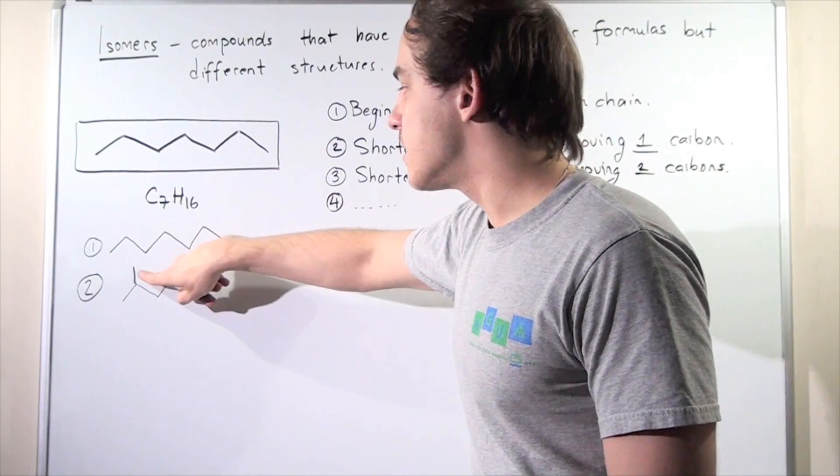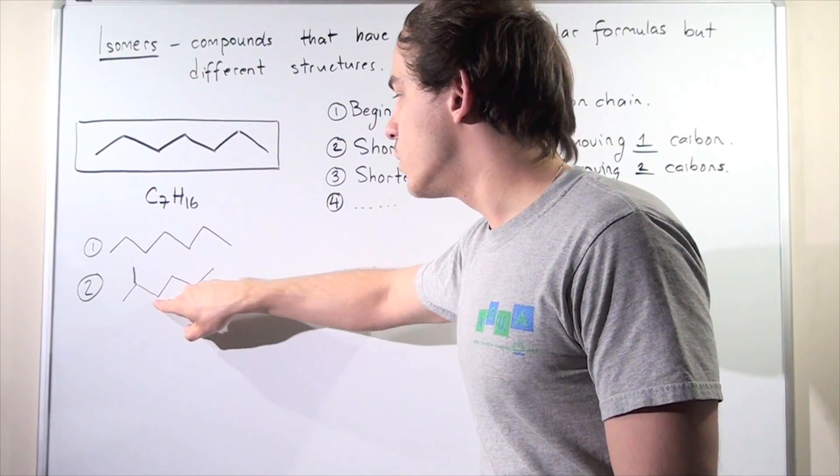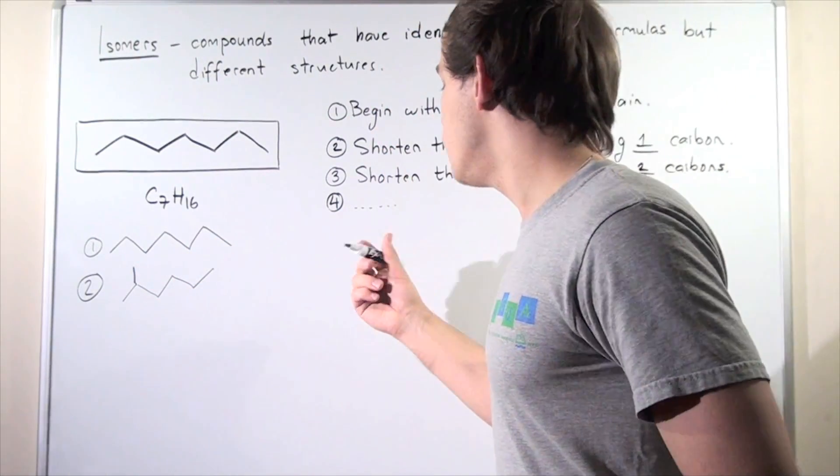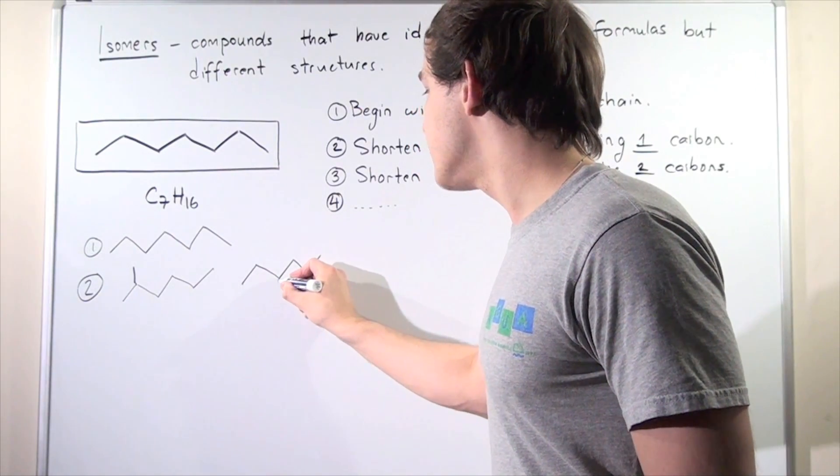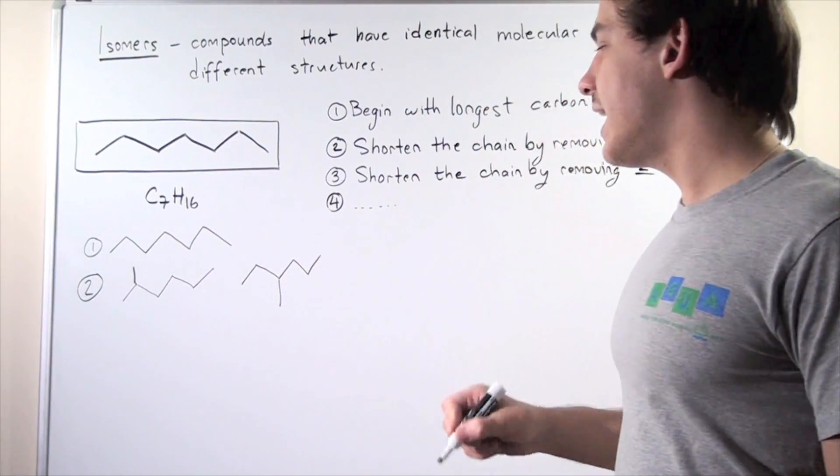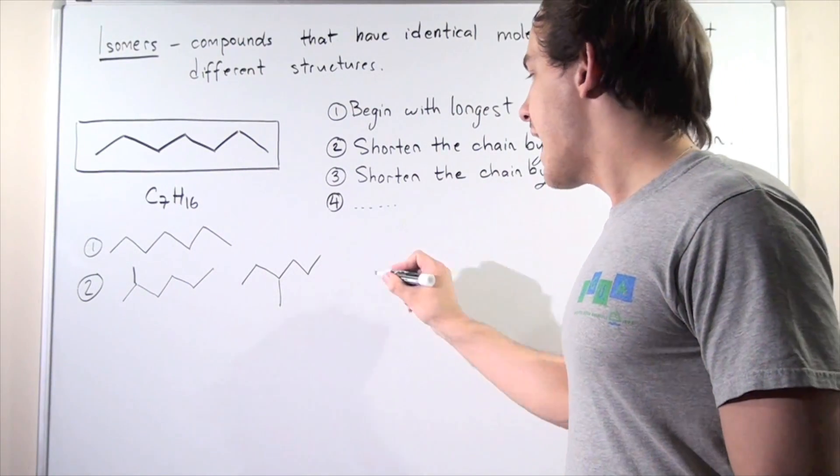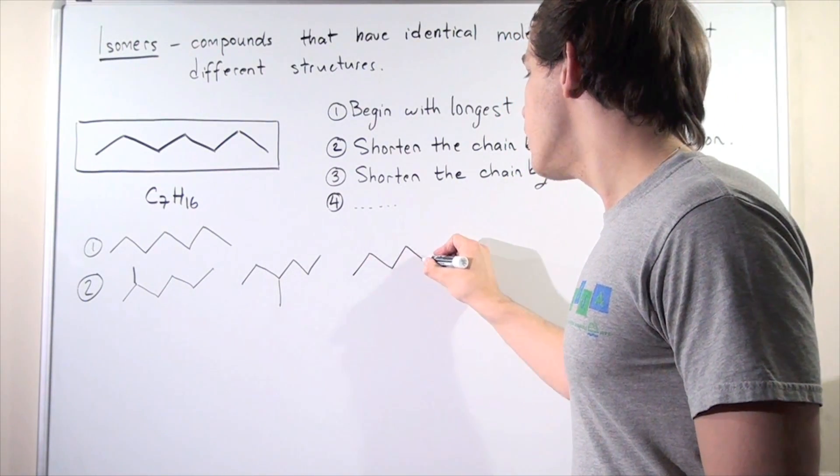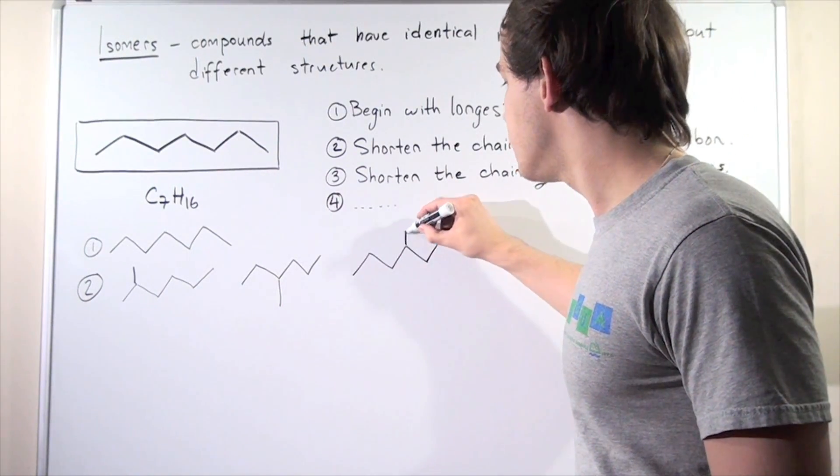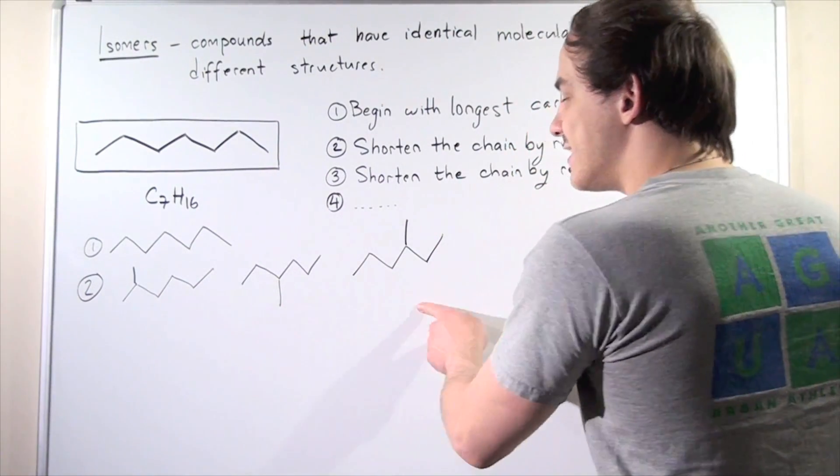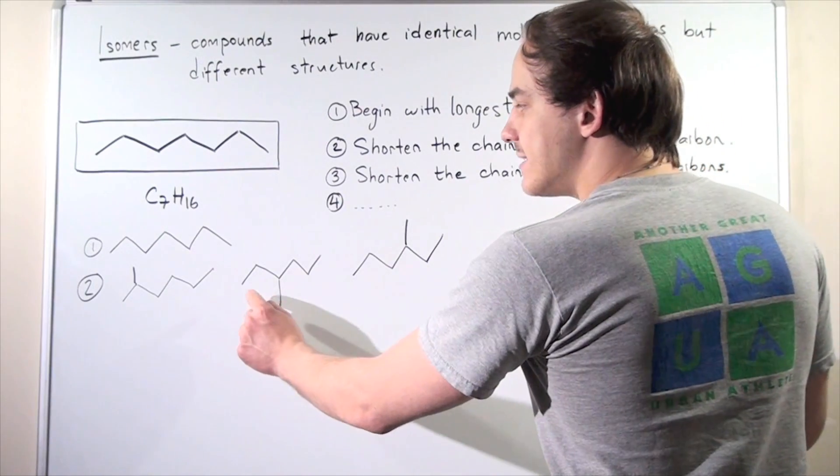So now let's take this methyl and place it onto this carbon and we will get another isomer. So we place this methyl group here and we get a third isomer. And notice if we draw one more and then we place our methyl onto this position, this guy is exactly the same as this guy.